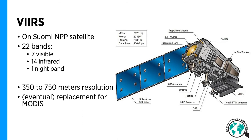The next example is VIIRS, which stands for Visible Infrared Imaging Radiometer Suite. This is onboard NASA's Suomi NPP satellite, which stands for the National Polar Orbiting Partnership. Despite the name, it's not a Finnish satellite — it's named after the Finnish-American scientist Werner Suomi. It was launched in 2011. It has 22 bands: 7 visible, 14 infrared, and one night band that's used for viewing cities, fires, and other lighted objects at night.